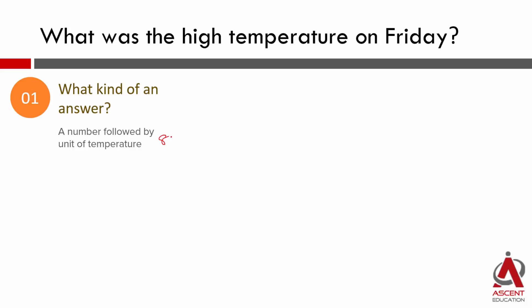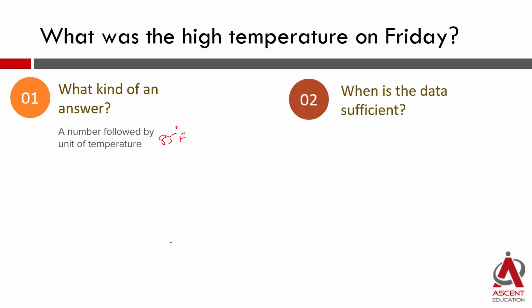For example, if I am able to say 85 degrees Fahrenheit, then the answer is sufficient. That number needs to be a unique number for the data to be sufficient, because it's a 'what is the number' question. We will also check what extra information is available in the question stem.